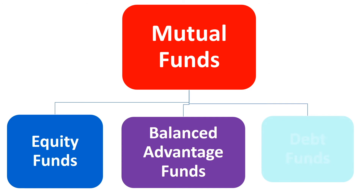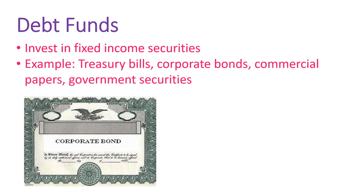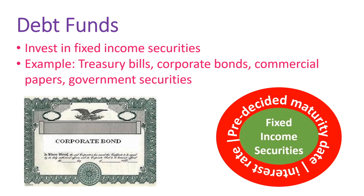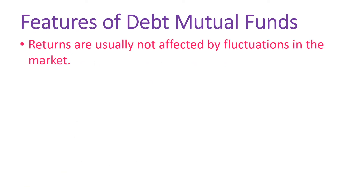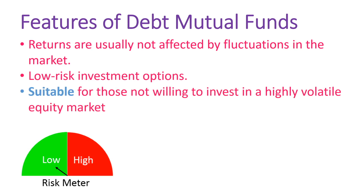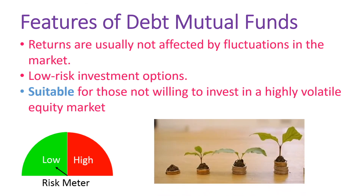The next type of mutual fund are debt funds. Debt funds invest in securities which generate fixed income like treasury bills, corporate bonds, commercial papers, government securities, and many other money market instruments. All these instruments have a pre-decided maturity date and interest rate, hence the name Fixed Income Securities. The returns are usually not affected by fluctuations in the market, so debt securities are considered low-risk investment options. Debt funds are preferred by individuals not willing to invest in a highly volatile equity market, and provide steady but comparatively lower income relative to equity.